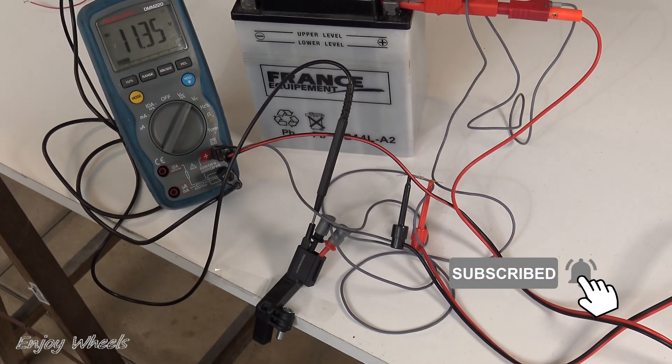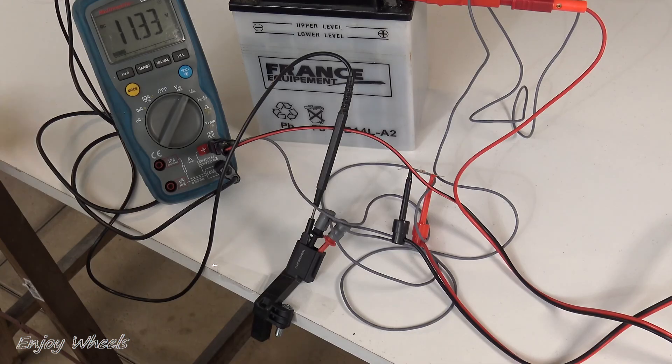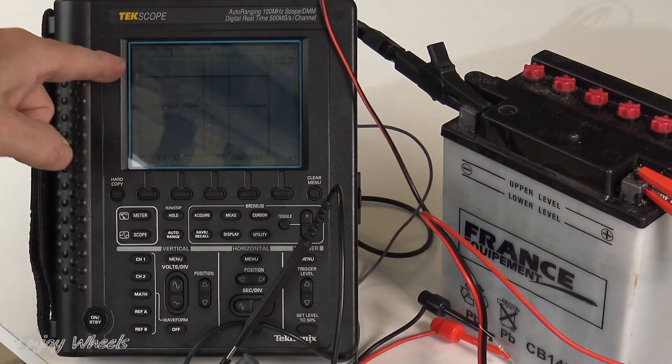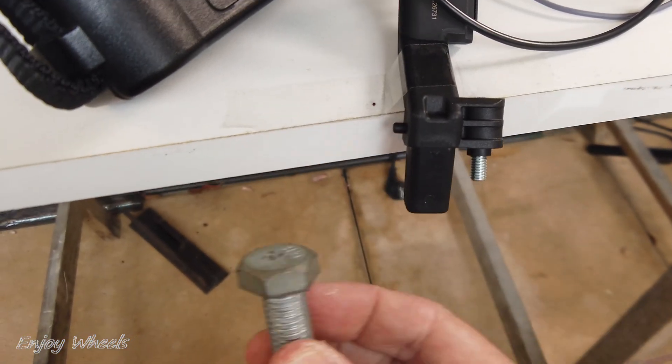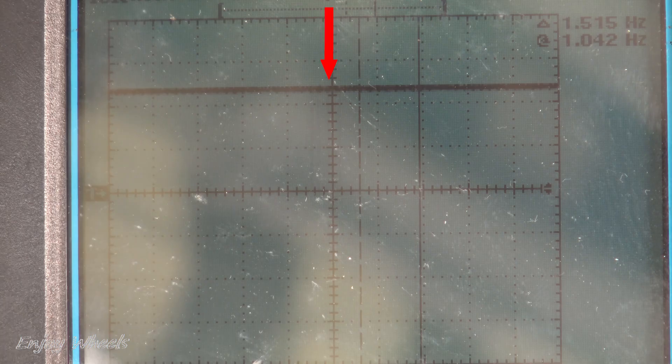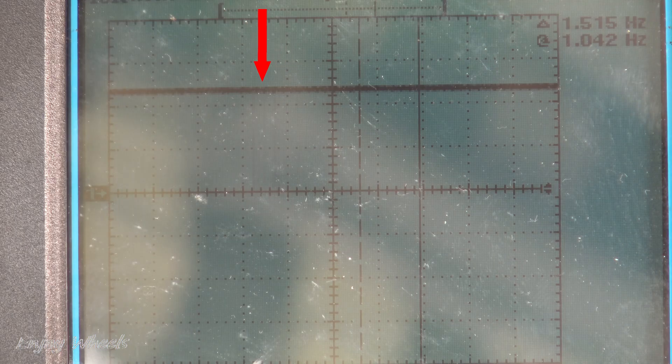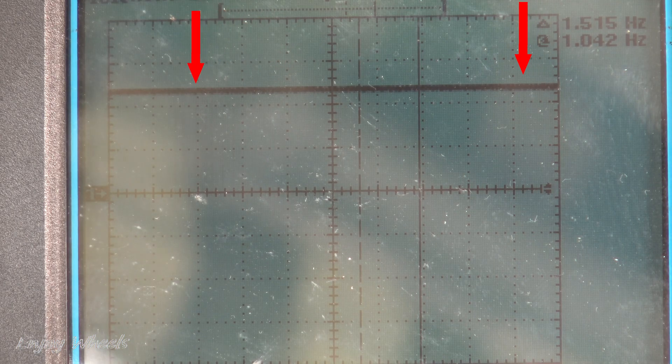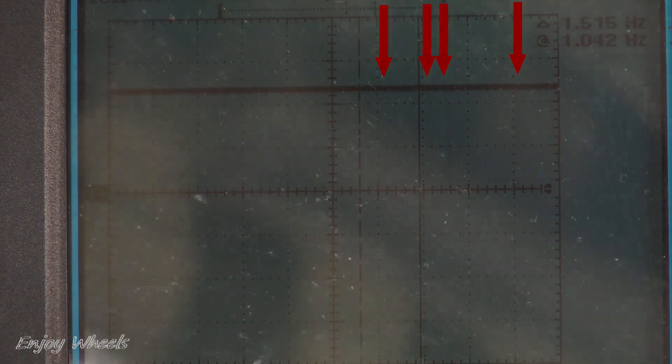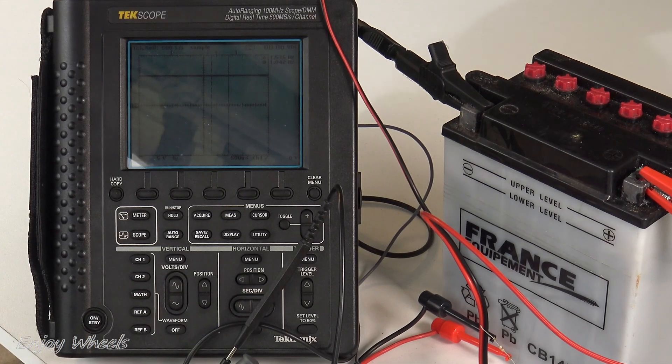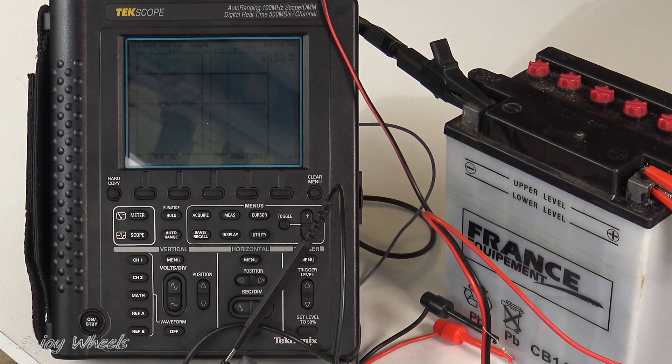So for those who have one, you can very well replace the voltmeter with an oscilloscope. There I have my signal which is at battery voltage. If I move my screw quickly in front of the sensor, well it makes small pulses at 0 volts when the screw passes. And there you go. Now you know how to test a Hall effect sensor outside the vehicle. Now we go to the second sensor which is an inductive sensor.